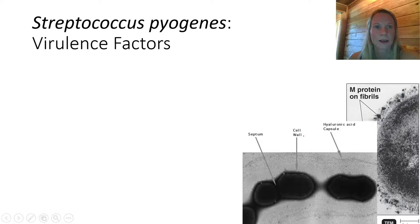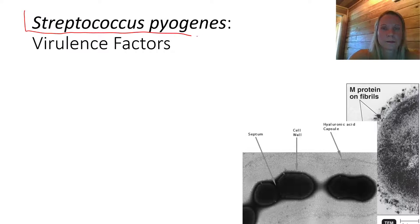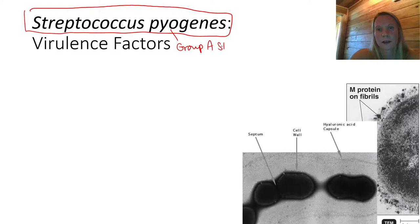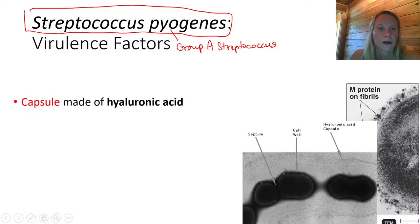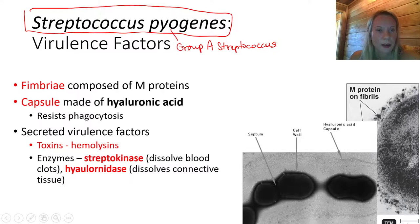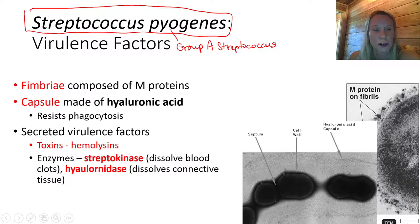Now let's move into Streptococcus pyogenes, the genus Streptococcus. Streptococcus pyogenes is our virulent strain, also referred to as Group A Streptococcus. Virulence traits include fimbriae composed of M protein — take note of that, it'll become important later. It's capsulated with hyaluronic acid. We have hemolysins, a type of exotoxin. We have various enzymes including streptokinase, which is analogous to staphylokinase with the ability to digest connective tissue and dissolve blood clots.